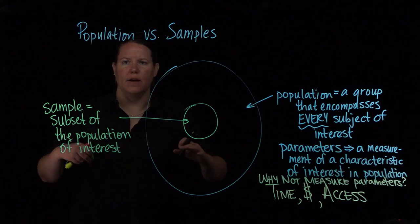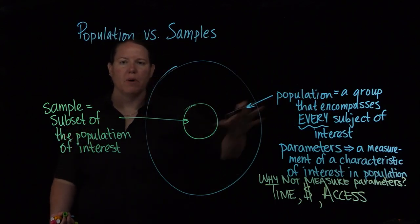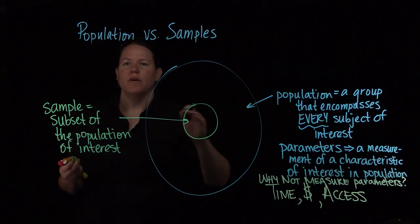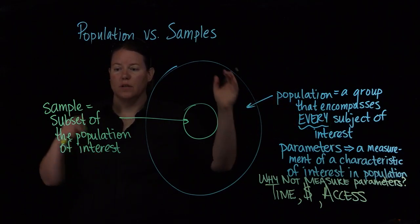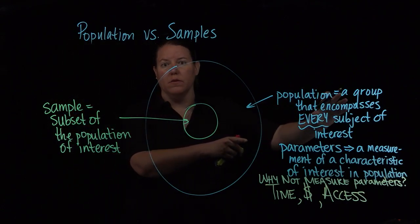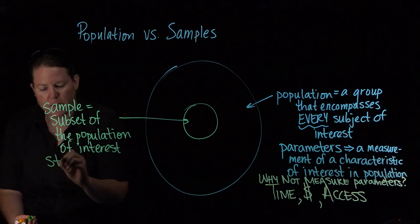So I want it to have as many aspects in common with the population as I can possibly get so that when I do some measurements of the characteristic of interest on this sample, I can then say, okay, those are also indicative of the population. So what are the measurements called?